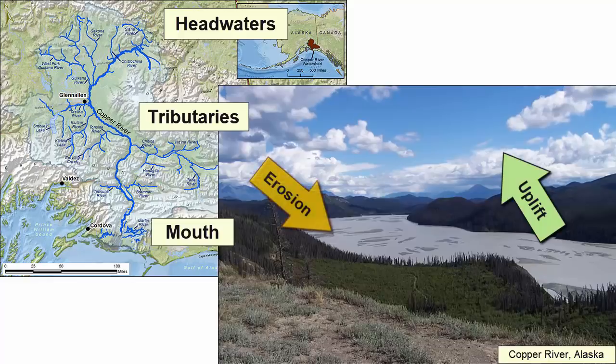Tectonics and isostatic uplift push the land up, while erosional agents such as running water carve it down. As water moves downhill, it will carve out rock from the high country and carry it to the low country. Its work is done when the river has carved the land flat.